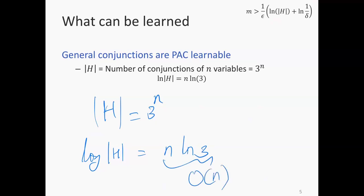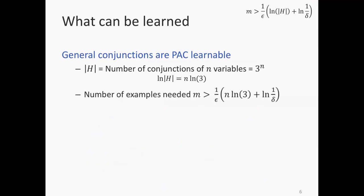That means we can rewrite the expression: the number of examples needed is more than (1/epsilon) times (n log 3 + log(1/delta)). Then any conjunction consistent with the dataset will have error less than epsilon on future examples, and this statement holds with probability 1 minus delta — assuming, of course, that the true function also is a conjunction. This discussion is essentially about whether a concept class is learnable or not.